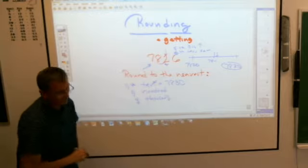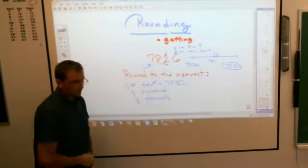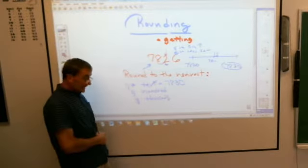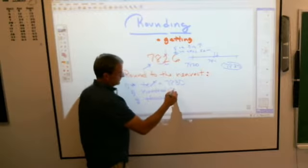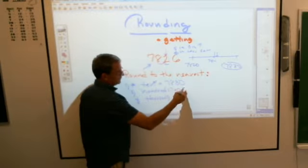So what is my answer? Am I going to round it up to 7,900 or is it going to stay 7,800? Is it going to stay 7,800? It's going to stay 7,800.